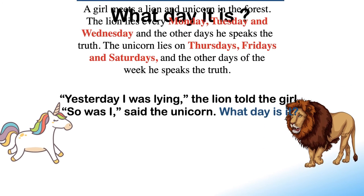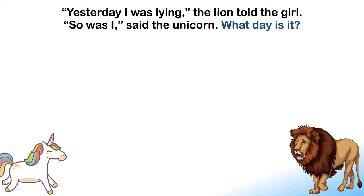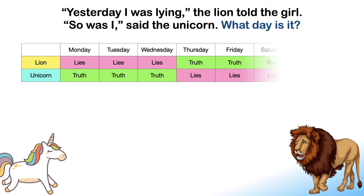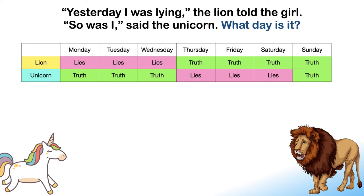Let me explain the solution now. As per the puzzle, the lion lies on Mondays, Tuesdays and Wednesdays, and the unicorn lies on Thursdays, Fridays and Saturdays. Let's create a table — the lion lies on Mondays, Tuesdays and Wednesdays and tells the truth the other days. The unicorn lies on Thursdays, Fridays and Saturdays and tells the truth the other days.